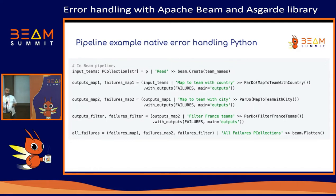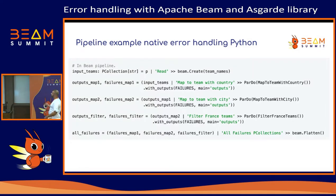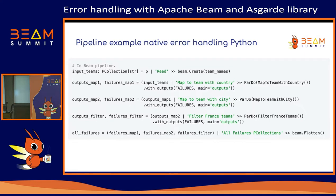Asgard also proposes a version for the Python SDK. For Python SDK, we have the same kind of need: if we want to apply error handling natively with Beam, we have to create DoFn classes with try-catch blocks inside. With the system of tags, we can, for each step, retrieve output and failure, and at the end concat all the failures in the flow.